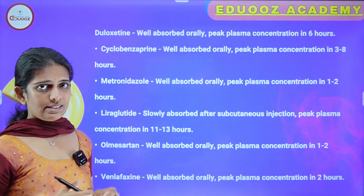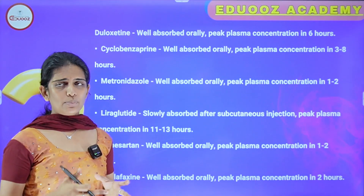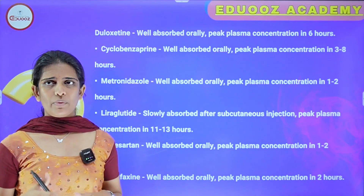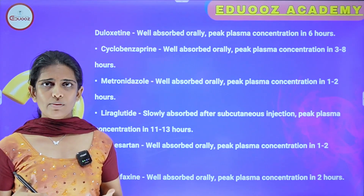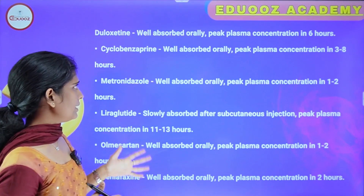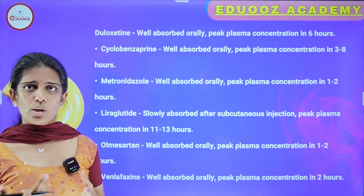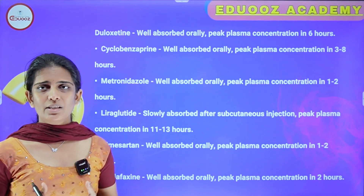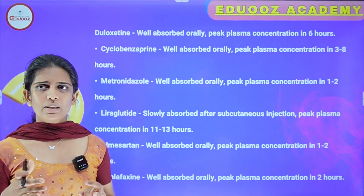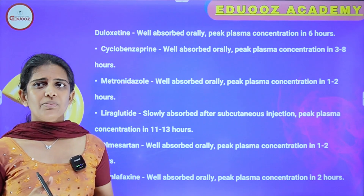Duloxetine is well absorbed orally with peak plasma concentration in 6 hours. Cyclobenzaprine, used as a muscle relaxant, is well absorbed orally with peak plasma concentration in 3 to 8 hours.